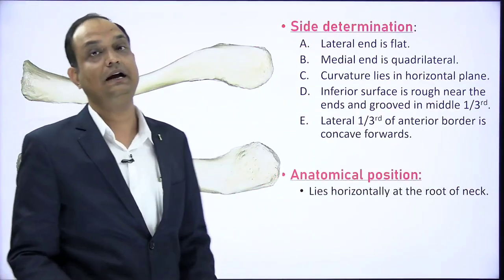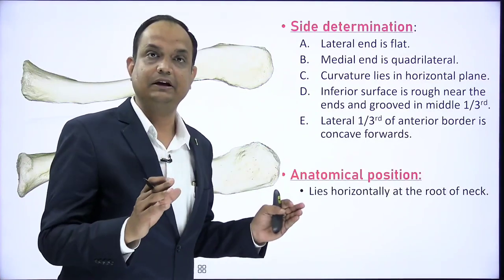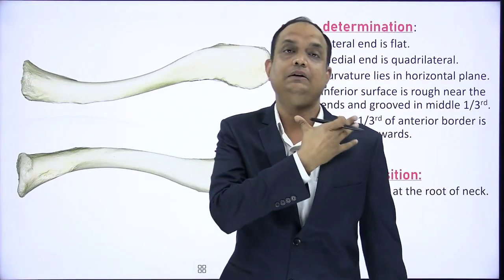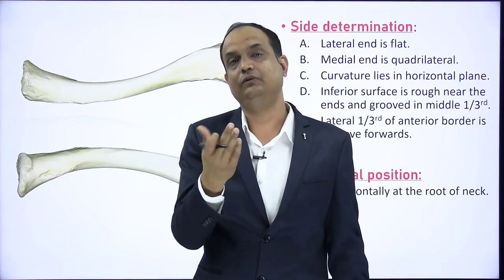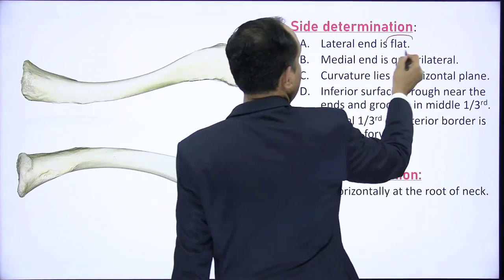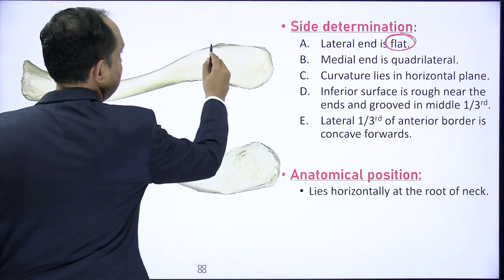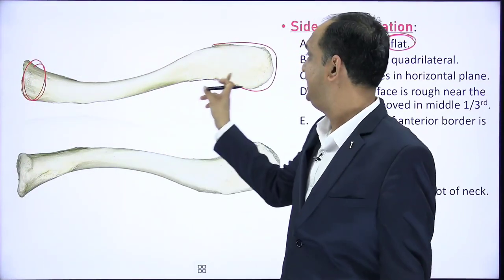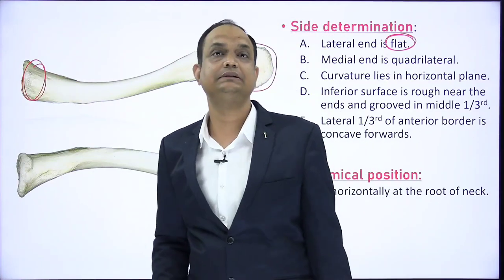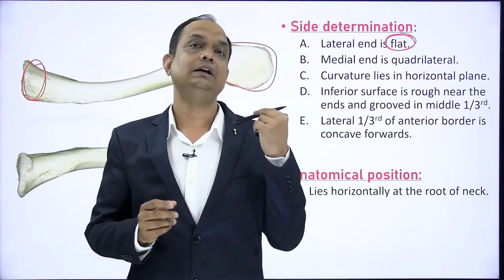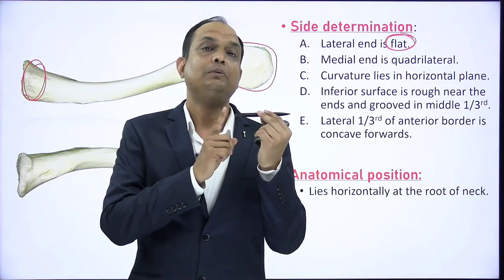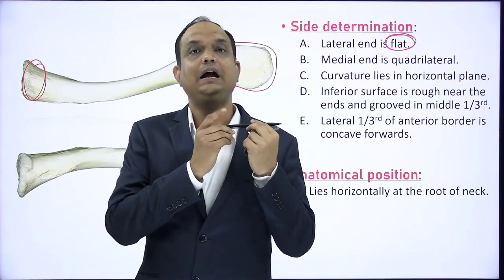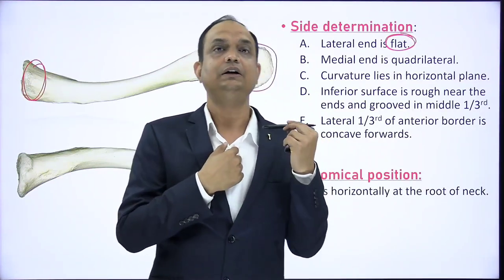For side determination of the clavicle, keep the bone horizontally. The lateral end is flat while the medial end is quadrangular or quadrilateral. So you place the flat end on the lateral side and the quadrangular end on the medial side. Once you hold the clavicle, first make sure your broad quadrangular end is on the medial side and the flat broad area is on the lateral side.